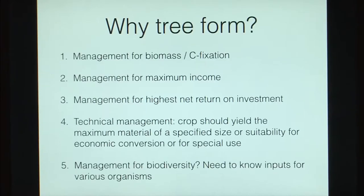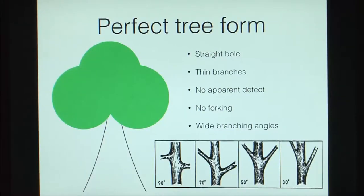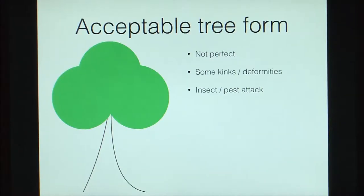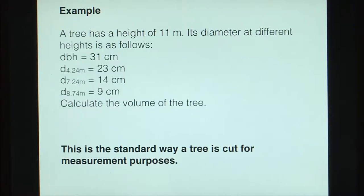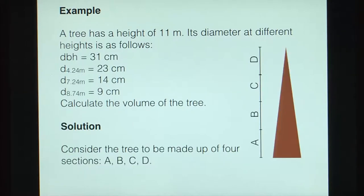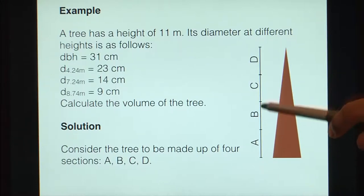Next, we looked at making cuts and tree form. A perfect tree form has a straight bole, thin branches, no apparent defect, no forking, and a wide branching angle — so the maximum volume is usable. We also looked at acceptable and unacceptable tree forms. A tree is cut for measurement purposes with sections: the first section A is twice the breast height, all other sections are 3 meters, and the top section is a cone. We measure these diameters and calculate the volume.